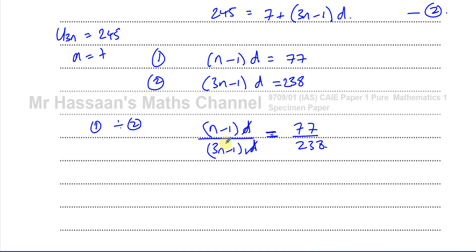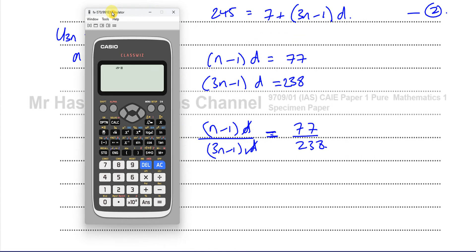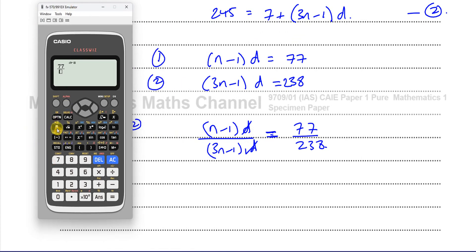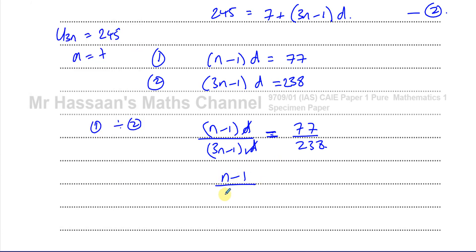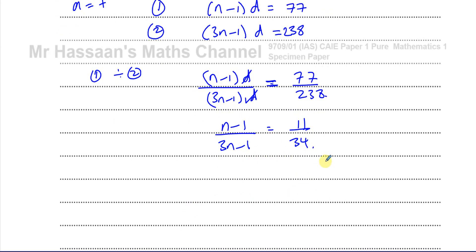So now I have this algebraic fraction where I have n as the only unknown and I can solve this. Now 77 over 238, I think that should simplify. Let's see, 77 over 238. Yes, 11 over 34. So I have n minus 1 over 3n minus 1 equals 11 over 34. Now I can cross-multiply.